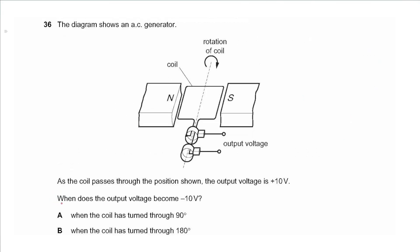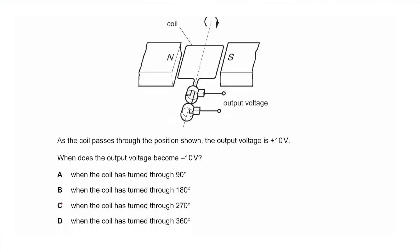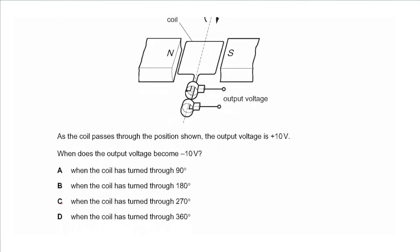Question 36 shows an AC generator. As the coil passes through the position shown, the output voltage is positive 10 volts. When does the output voltage become negative 10 volts? That would be when the motion of each side is reversed — reversed means 180 degrees rotation — so the answer is B.